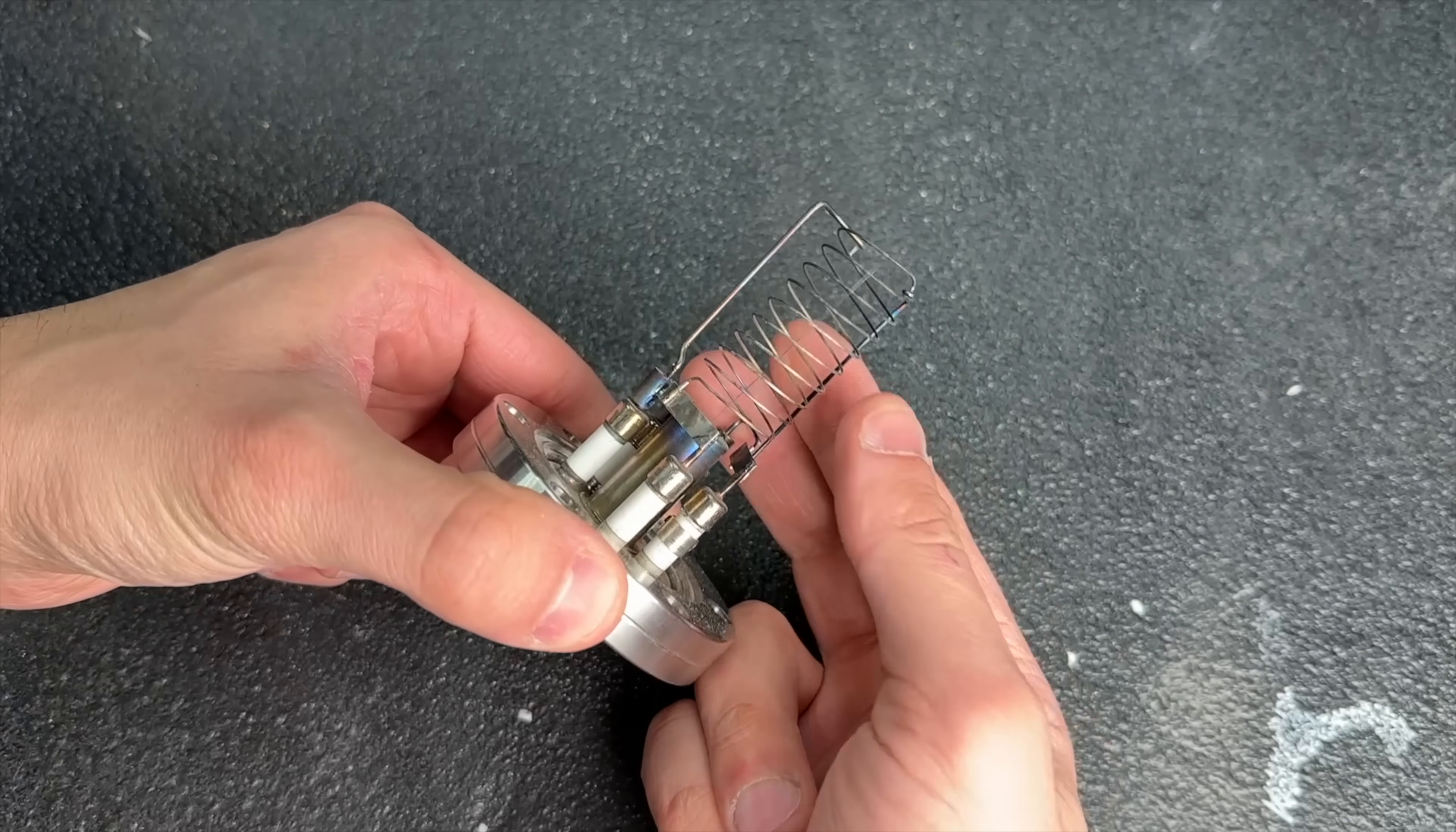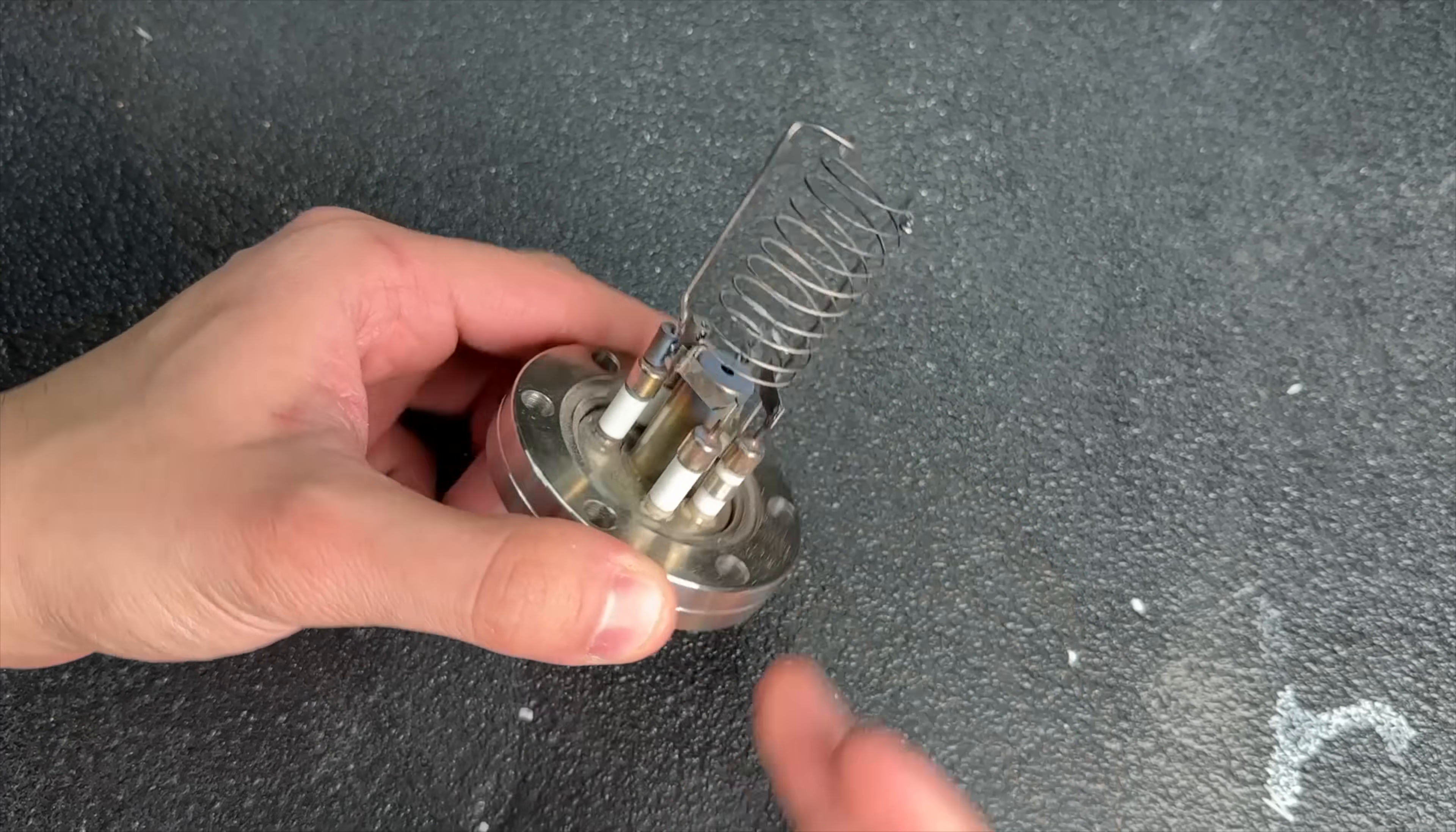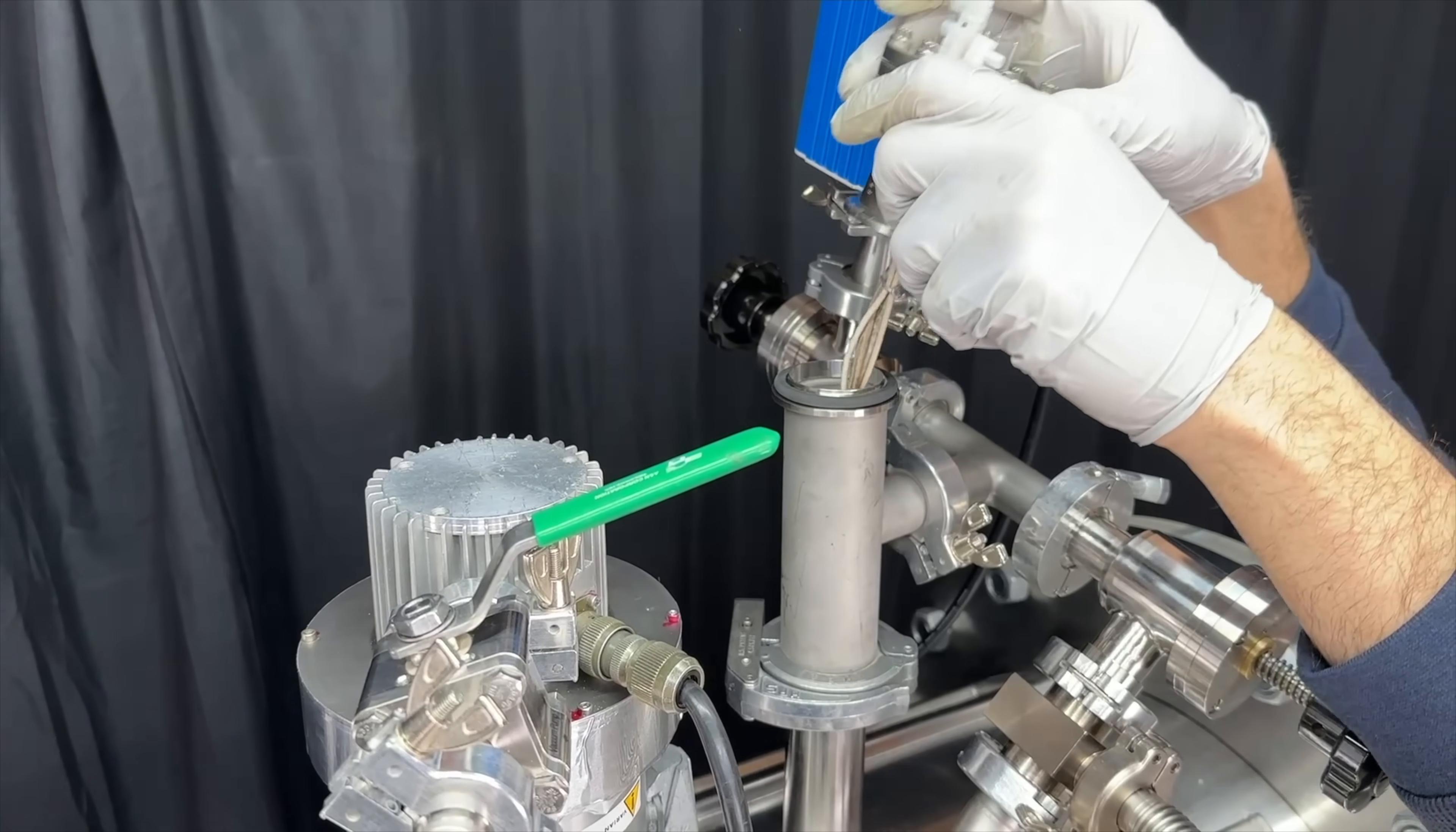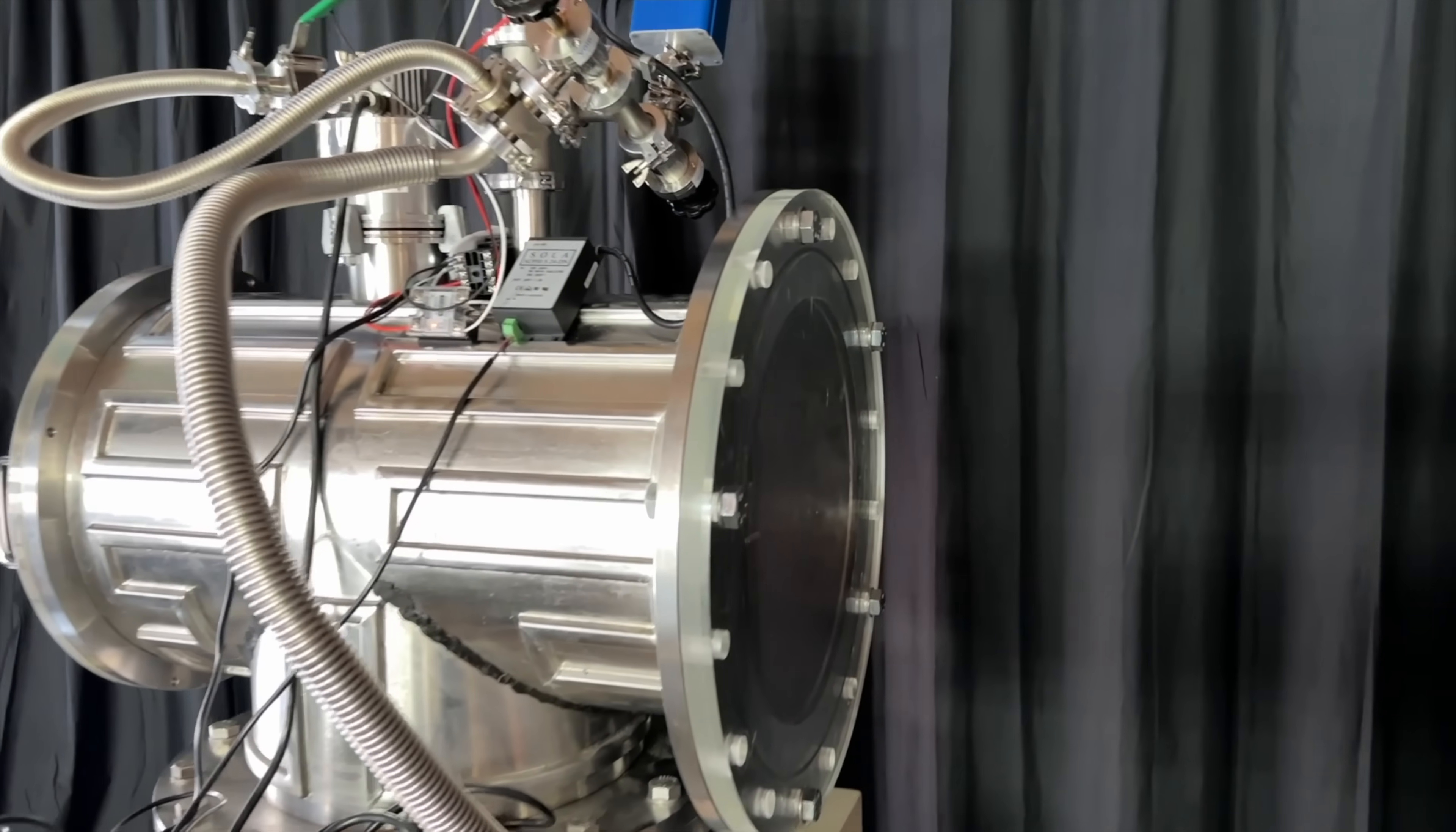But when they stop working they're practically worthless. So I bought a pair of broken ones on eBay for 90 bucks, eliminated all of the fancy expensive stuff that was damaged and was left with a perfect ultra-high vacuum electrical feed through. And this worked like magic.